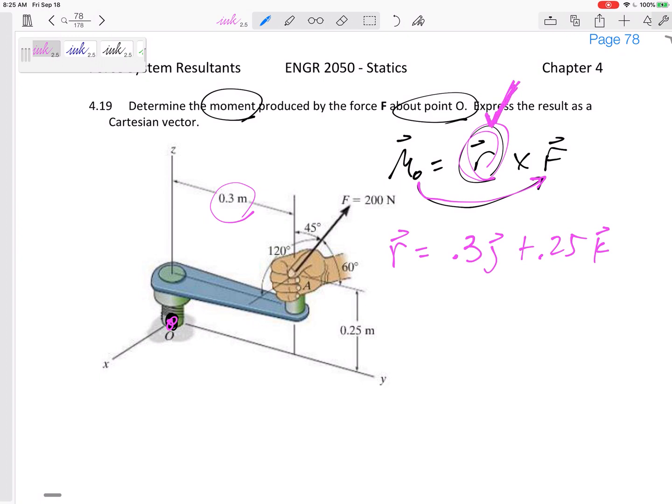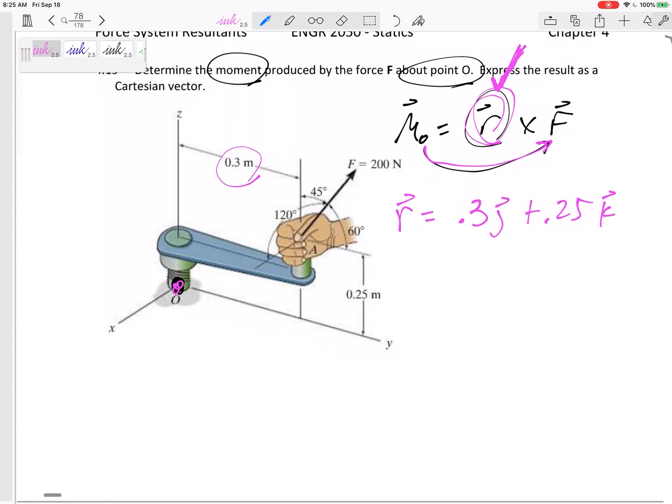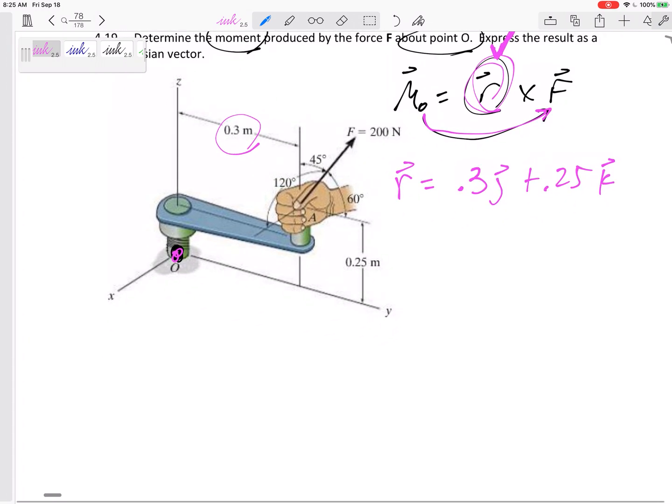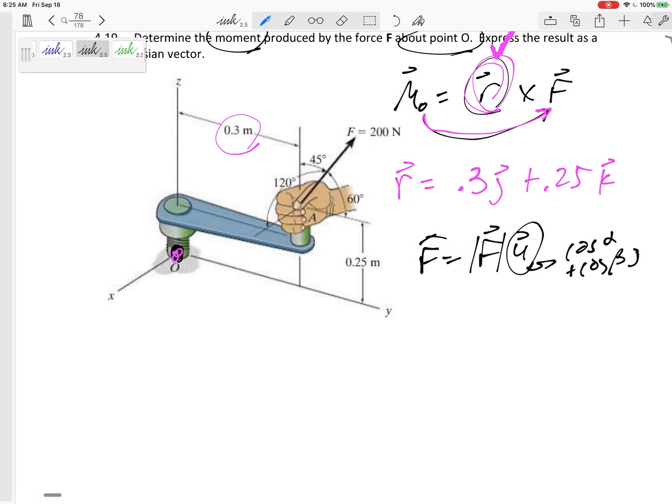All right, got it. I like to put a check mark when I've got one of those. Now how about the force? Can't just plug in 200, got to write that in i, j, k. So these are coordinate direction angles. What do I do when I see coordinate direction angles? I think F equals F times u, where u is cosine alpha i plus cosine beta j plus cosine gamma k.